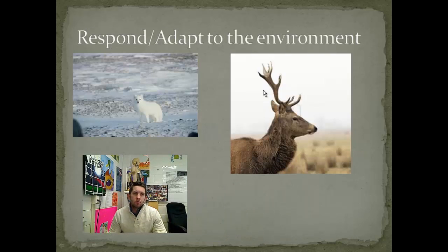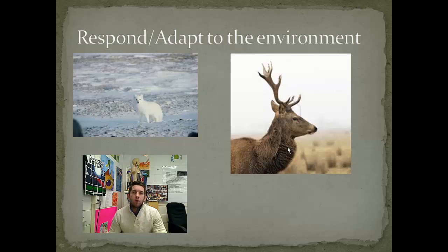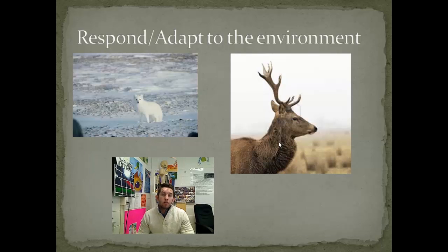All living things respond and adapt to their environment. We're talking about becoming more efficient in our environment — being able to operate more successfully where we live. That might mean possessing a camouflage color like an arctic fox, or growing a winter coat like a deer when it gets cold. All living things have to make some adjustment, some response to their environment in order to be successful and not go extinct.